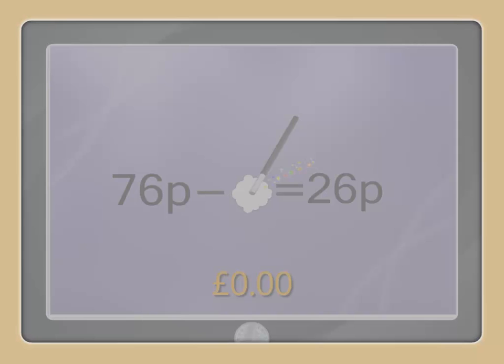You had some money, but Merlin the Magician made it disappear. Look at each equation and find out how much disappeared. Show your answer by dragging the correct number of pence into the centre.